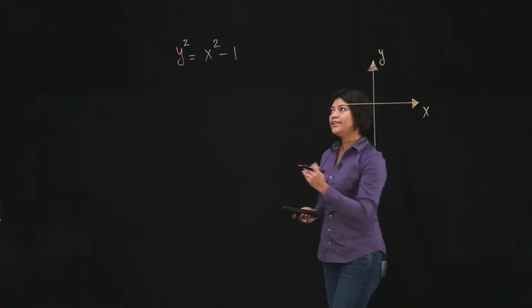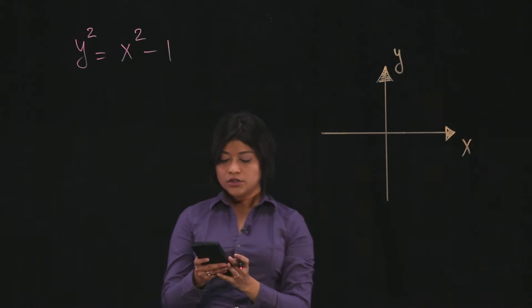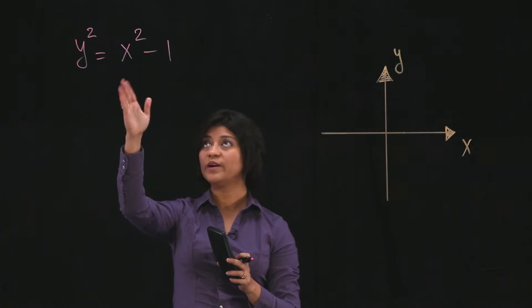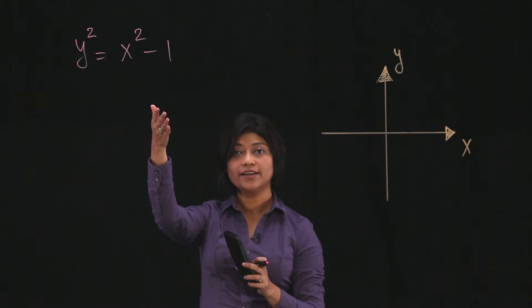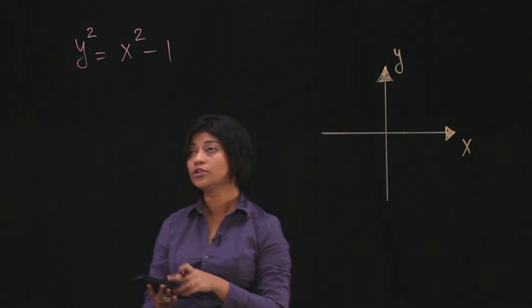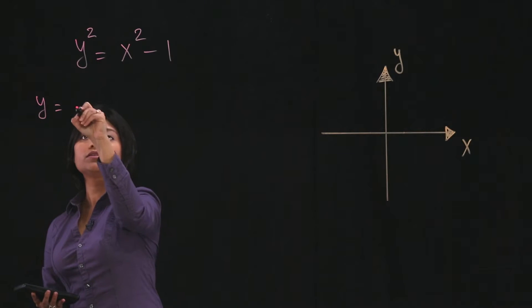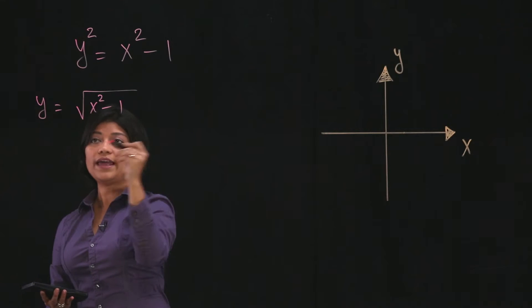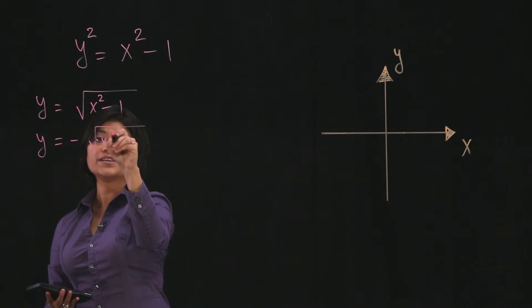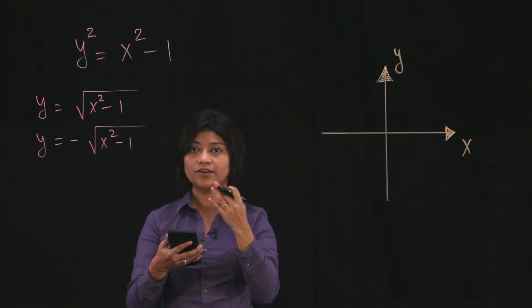Now you can clearly see that this is an implicit form since it's not given as y equals. So in order to graph it, you can change it to y equals by taking square root both sides, right? But remember, you have to use positive and negative square root. So you can plug in y equals square root x squared minus 1, and plug in y equals negative of square root x squared minus 1. So two different equations. Plug in and then graph it.